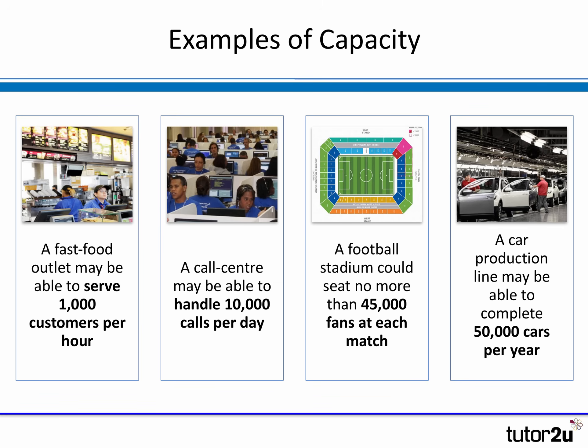There are lots of different ways you can measure capacity. The key thing is it's a measure of potential output, the maximum output. For example, a fast food outlet might be able to serve a thousand customers per hour based on how many stations and staff it has. A call centre might be able to handle a certain number of calls per day, assuming all the staff are in and available. Similarly, a great example is a football stadium where the capacity is largely fixed by the number of seats that can be sold for each match.